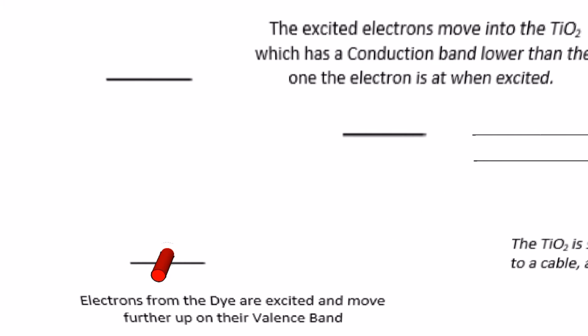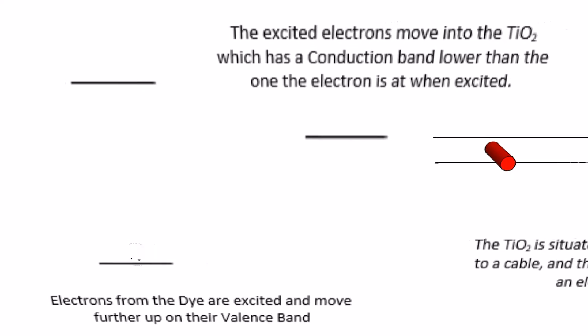They have now an increased level of energy and most of them migrate to the titanium dioxide's conduction band which provides them with a lower energy level. The titanium as it has electrons on its conduction band now conducts electricity.